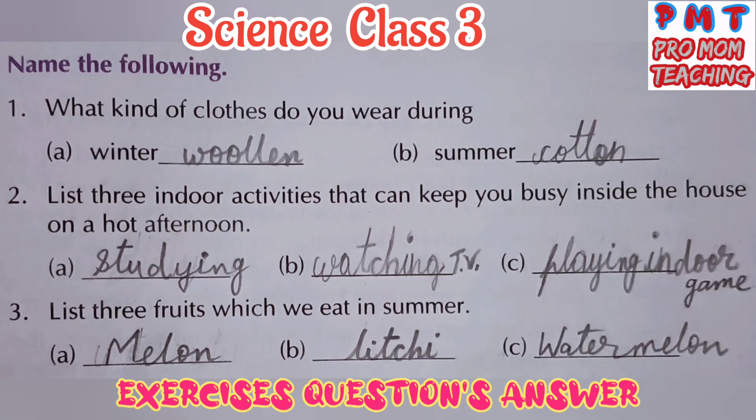Name the following. First, what kind of clothes do you wear during winter? Answer is woolen. In summer, we wear cotton clothes. Second, list three indoor activities that can keep you busy inside the house on a hot afternoon. Answer is studying, watching TV, playing indoor games.